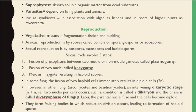For reproduction, fungi follow vegetative means including fragmentation, fission, and budding. Asexual reproduction is by spores called conidia, sporangiospores, or zoospores. Sexual reproduction is by oospores, ascospores, and basidiospores. The sexual cycle involves three steps: fusion of protoplasts between two gametes, which is called plasmogamy; fusion of two nuclei, called karyogamy; and meiosis of the zygote resulting in haploid spores.